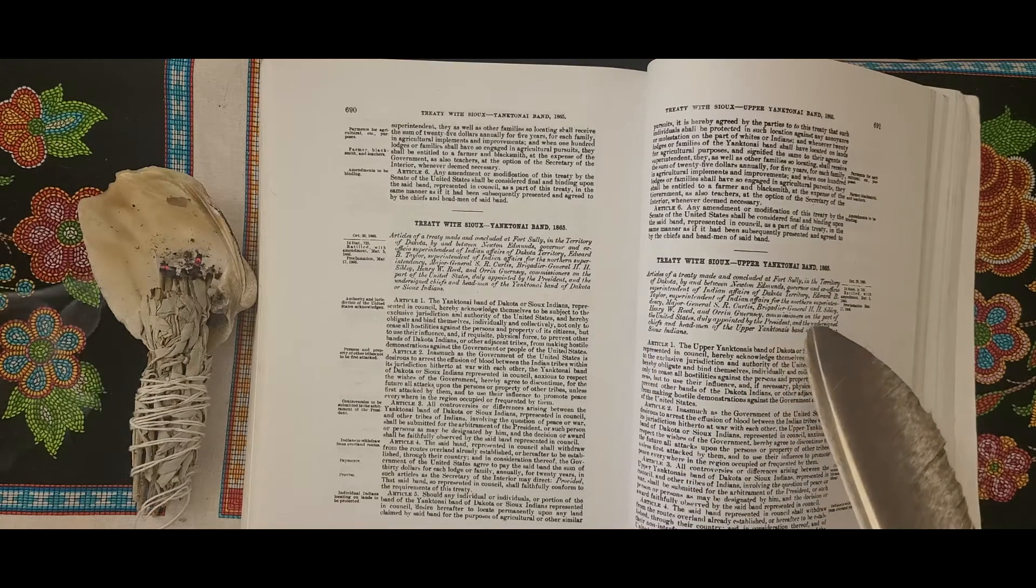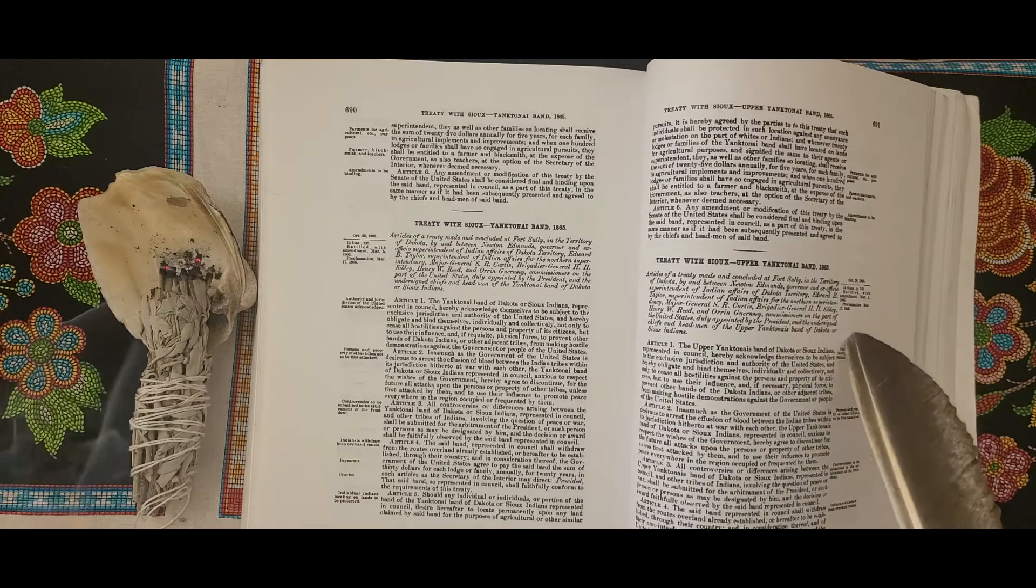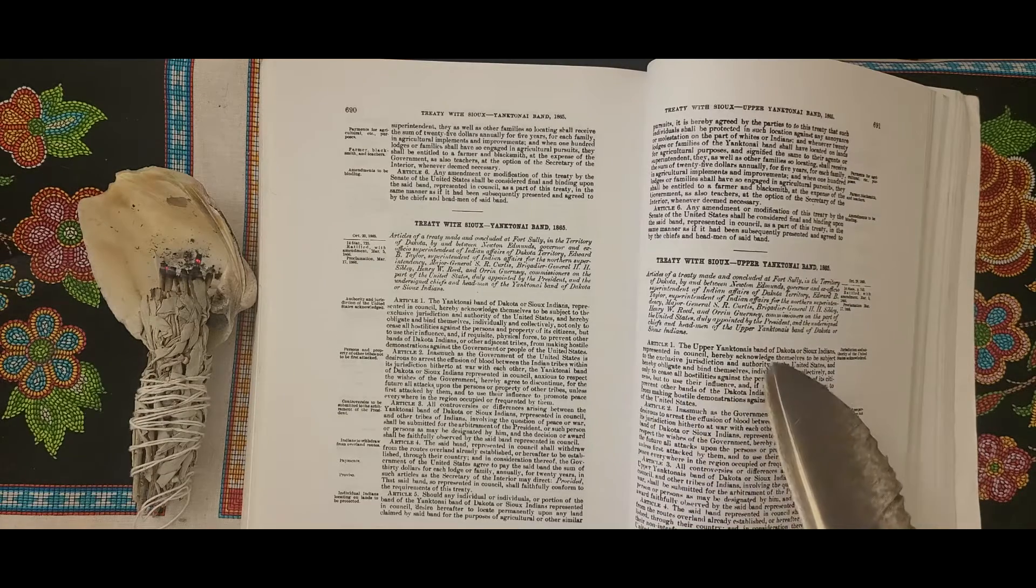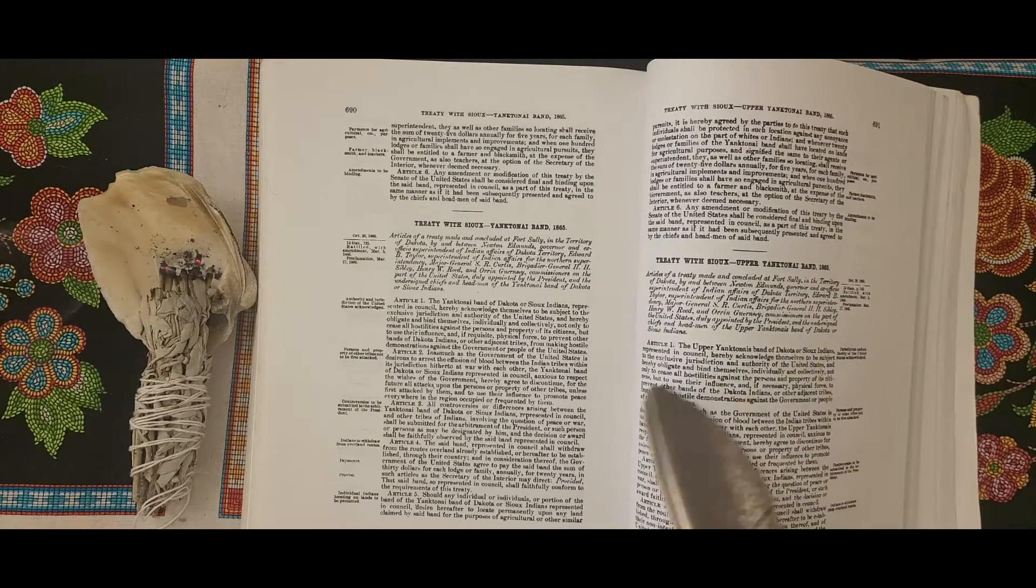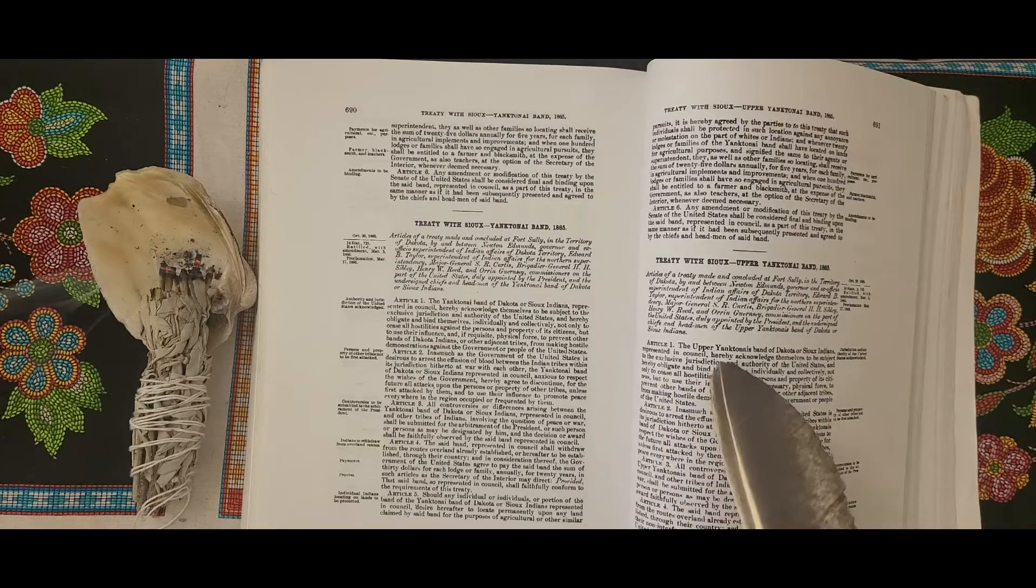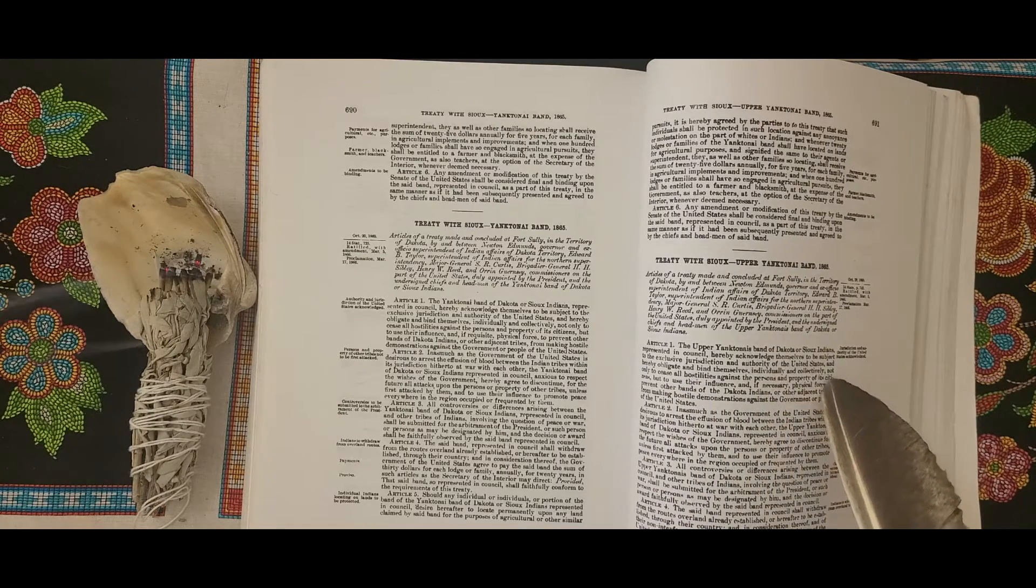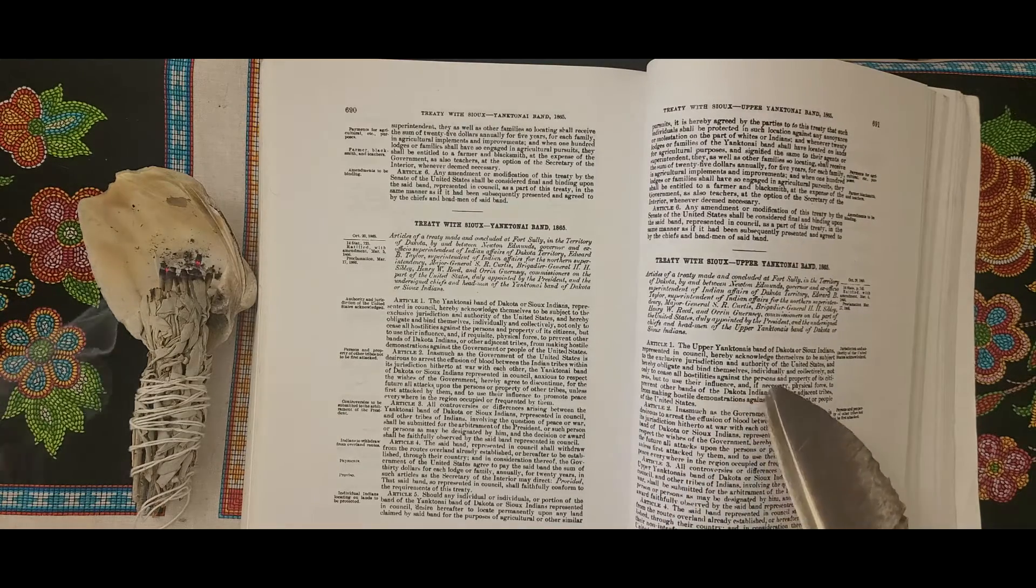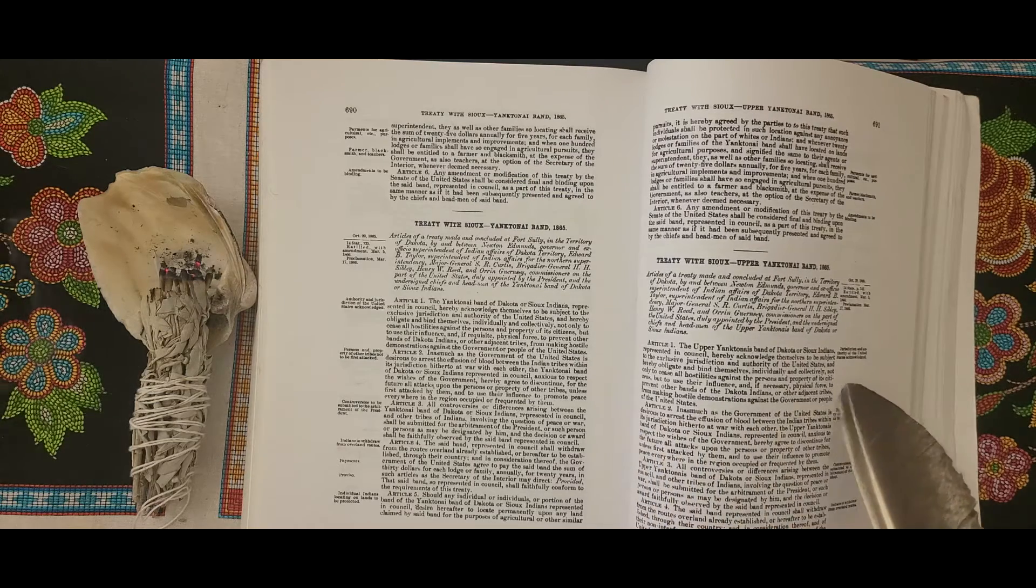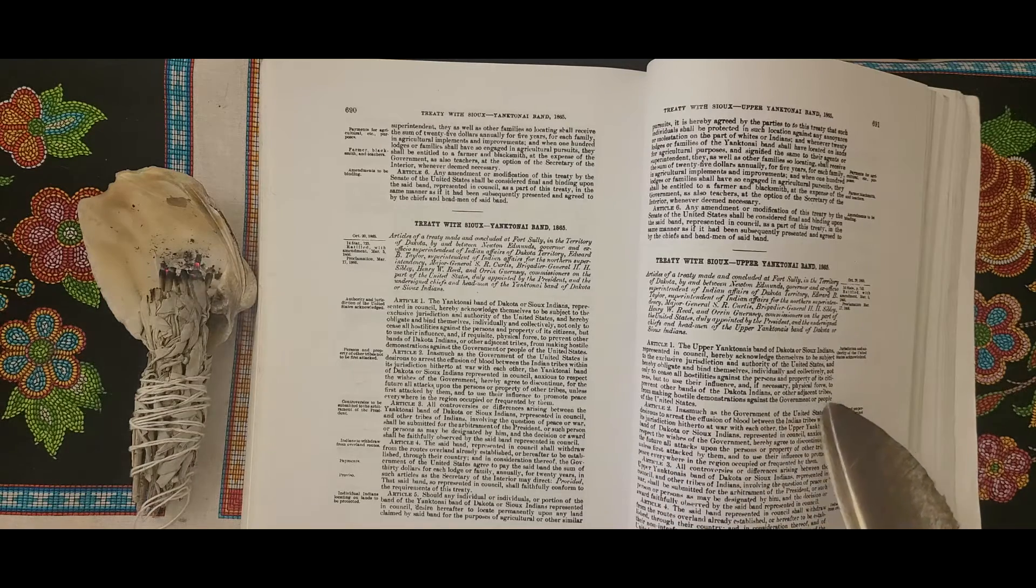...and the undersigned chiefs and headmen of the Upper Yanktonai Band of Dakota or Sioux Indians. Article 1: The Upper Yanktonai Band of Dakota or Sioux Indians represented in council hereby acknowledge themselves to be subject to the exclusive jurisdiction and authority of the United States, and hereby obligate and bind themselves individually and collectively not only to cease all hostilities against the persons and property of its citizens, but to use their influence and, if necessary, physical force to prevent other bands of the Dakota Indians or other adjacent tribes from making hostile demonstrations against the government or people of the United States.